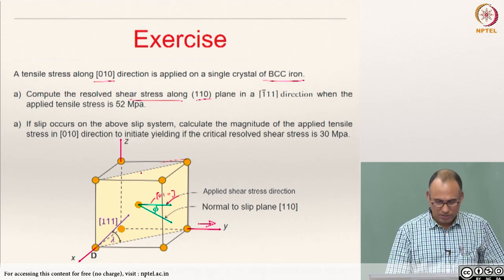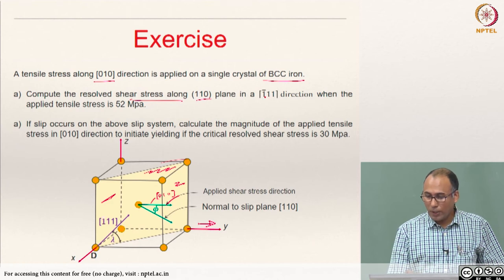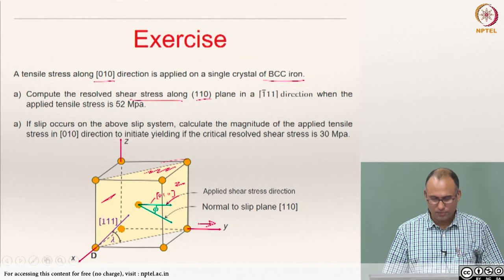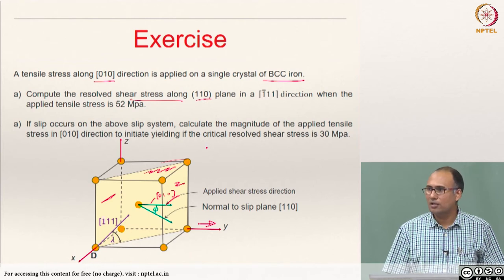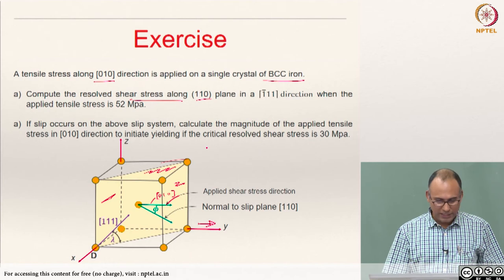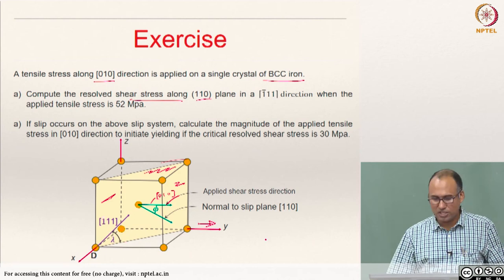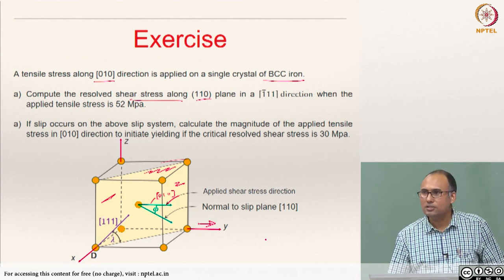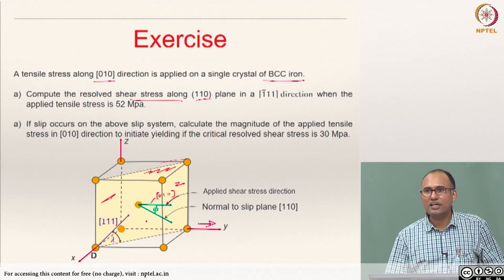The (110) plane is shown in yellow. You need to compute the resolved shear stress in the (110) plane along the [1̄11] direction, which is a body diagonal. To calculate this, we need the Schmid factor: tau_r = sigma × cos phi × cos lambda, where sigma = 52 MPa. We need to find phi, the angle between the loading direction and the slip plane normal, and lambda, the angle between the loading direction and the slip direction.